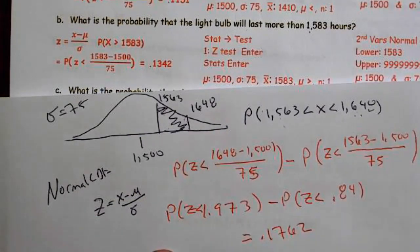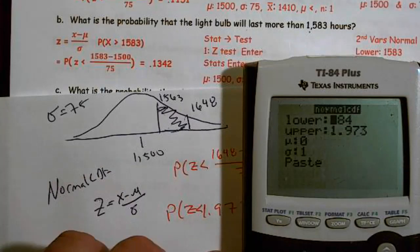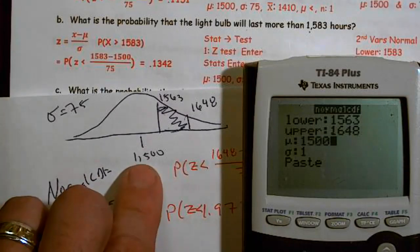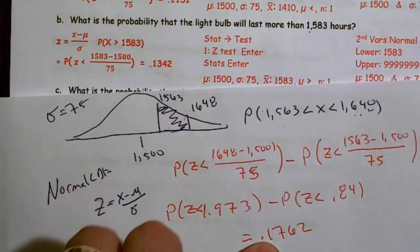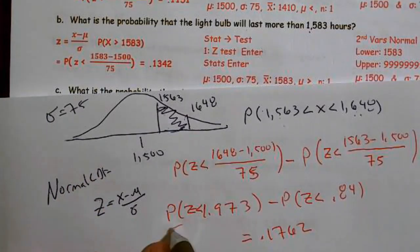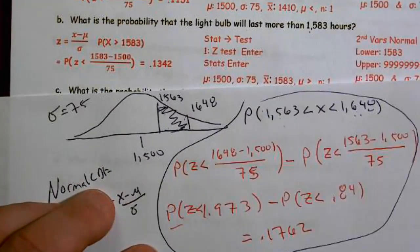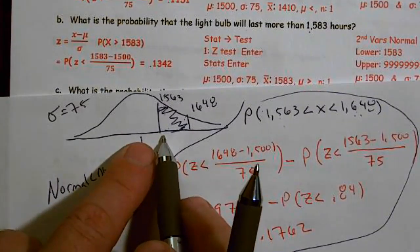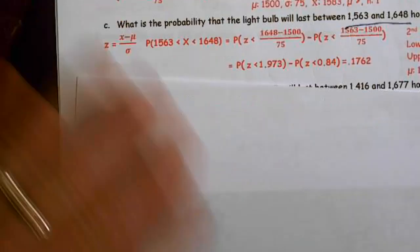That would be adequate work shown. I could have also gone second VARS, normal CDF, with lower bound 1563, upper bound 1648, mean 1500, standard deviation 75 — and I'd get the same 0.1762. The key thing is we have to include the Z scores. All of this has to be my work shown. If I'm working between something, I use normal CDF; if I'm working upper bound or lower bound, I use the Z-test.